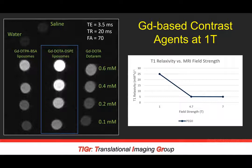This is a conscious choice because clinical applications often are at lower field strengths, 1.5 Tesla and 3 Tesla. Being able to use a contrast agent that could be translated into the clinic means we need to be conscious about using lower field strength applications.